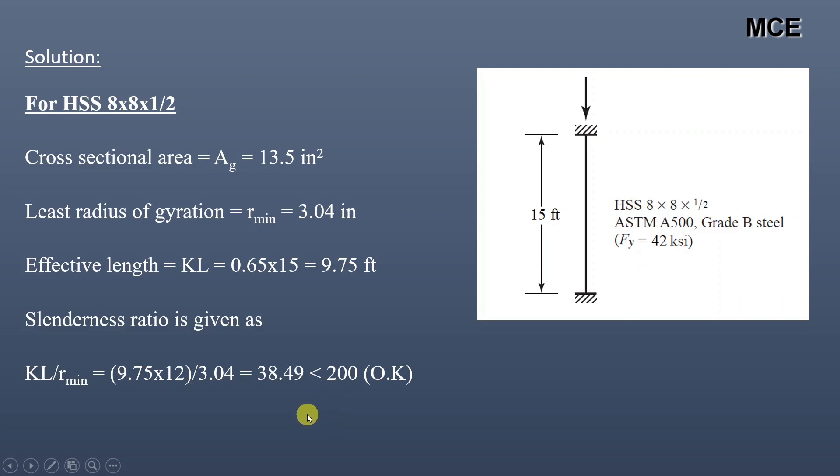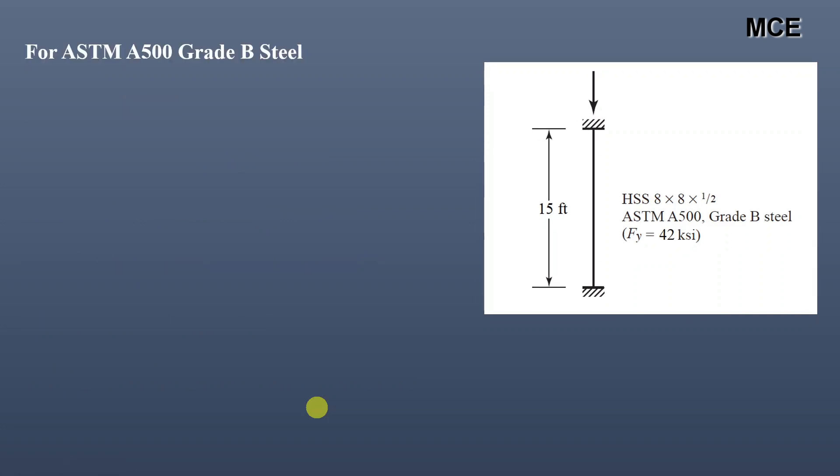So we can proceed with the design. Now for ASTM A500 grade B steel, modulus of elasticity is given as 29,000 ksi and the yield stress is equal to 42 ksi.